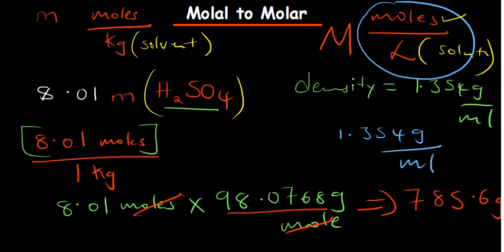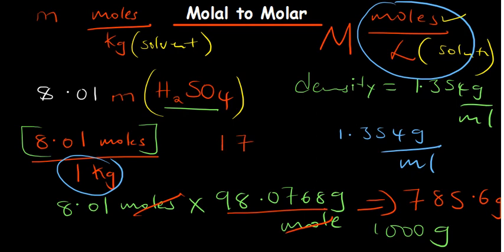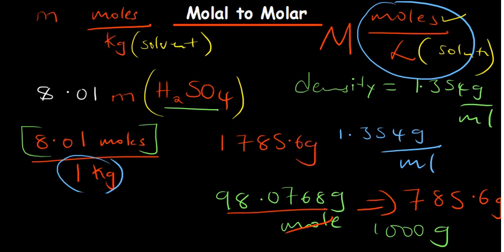We need the mass of the total solution because the given density is the density of the solution. The mass of the solvent, from our assumption, is 1 kilogram, which equals 1000 grams. Adding the mass of the solute (785.6 g) and the solvent (1000 g) gives us a total solution mass of 1785.6 grams.